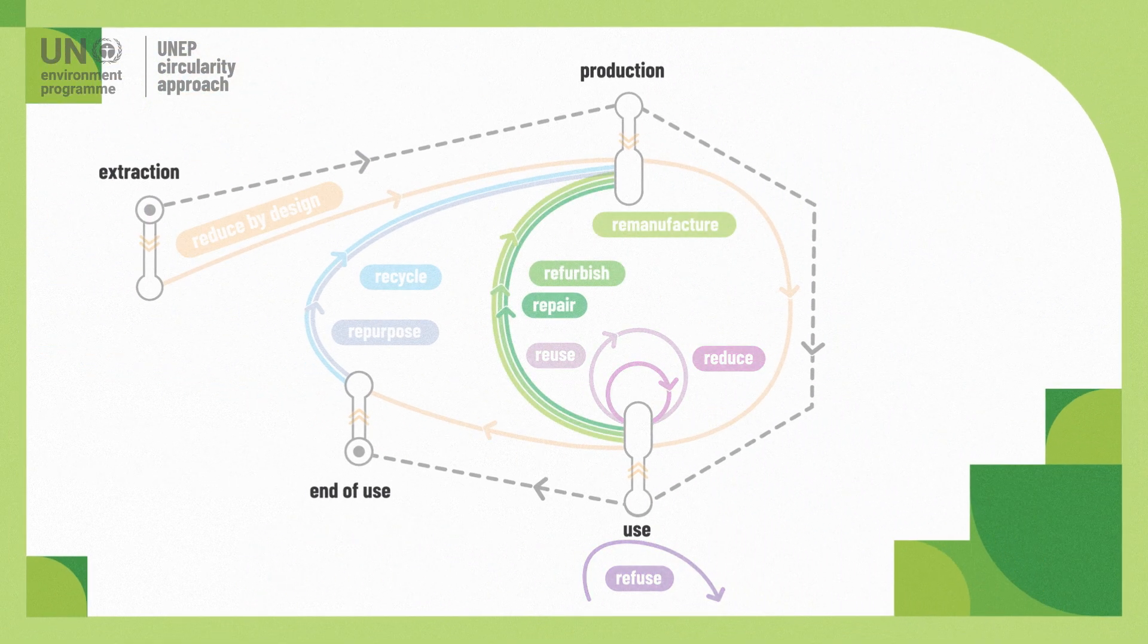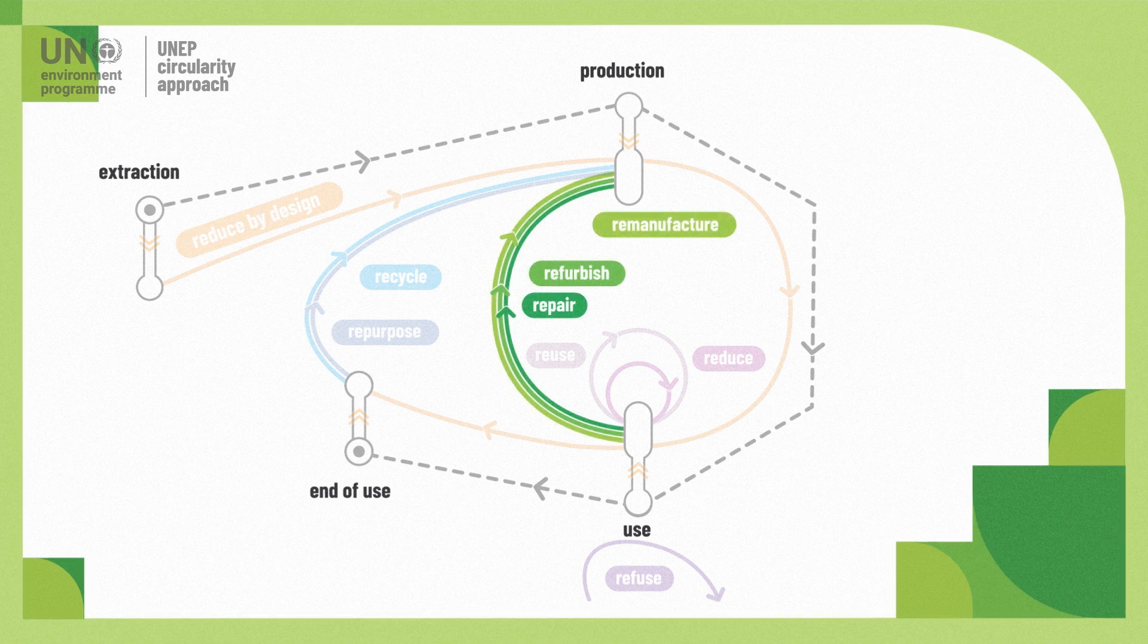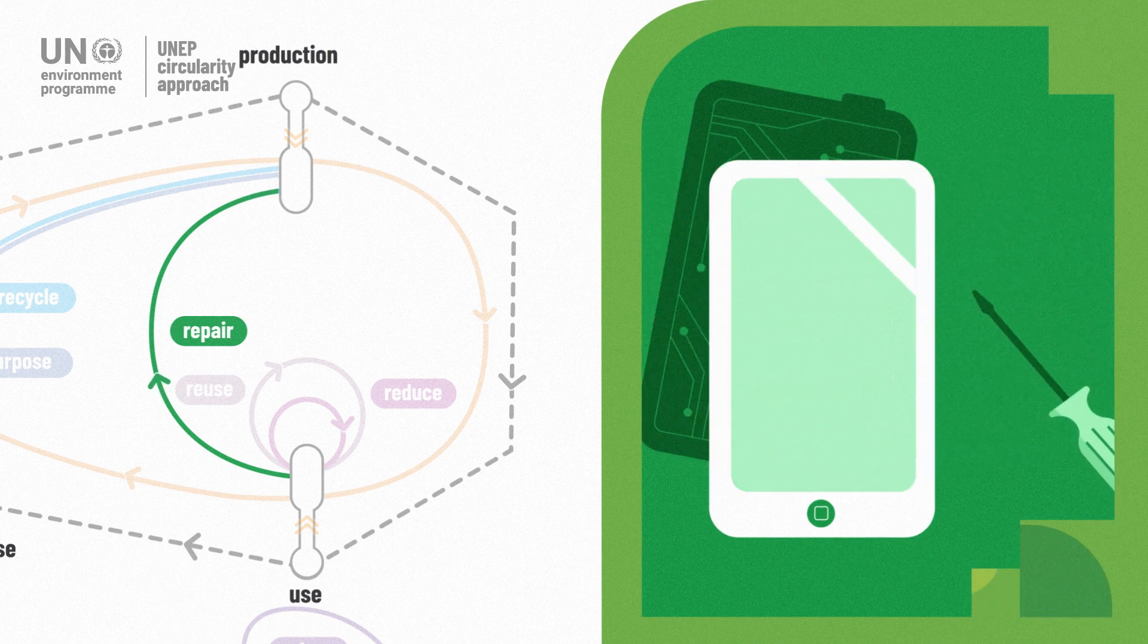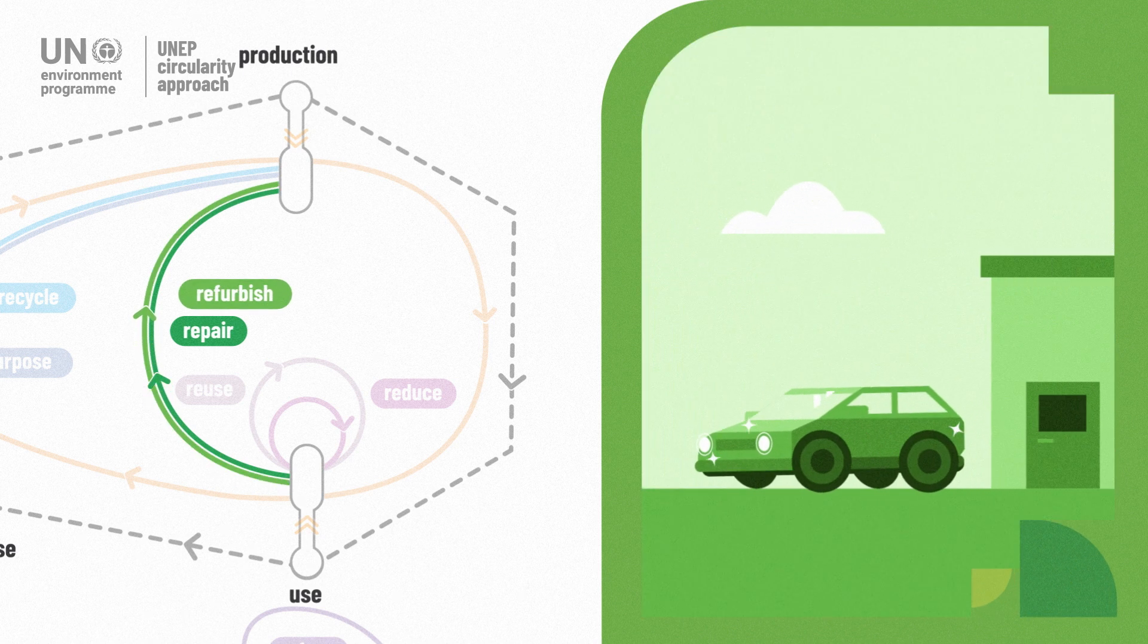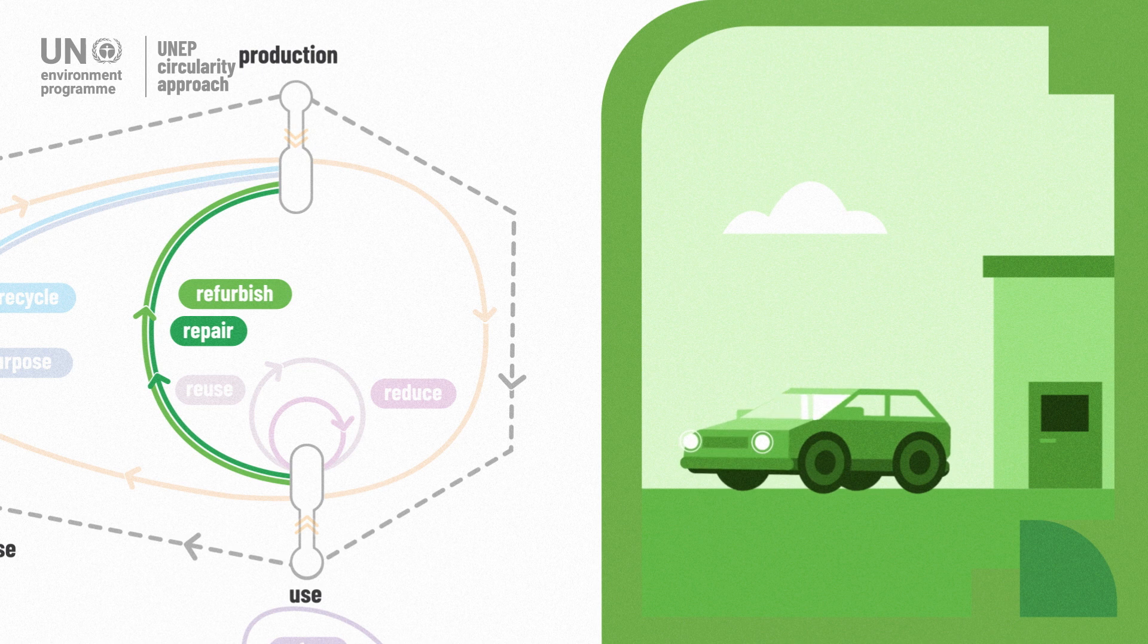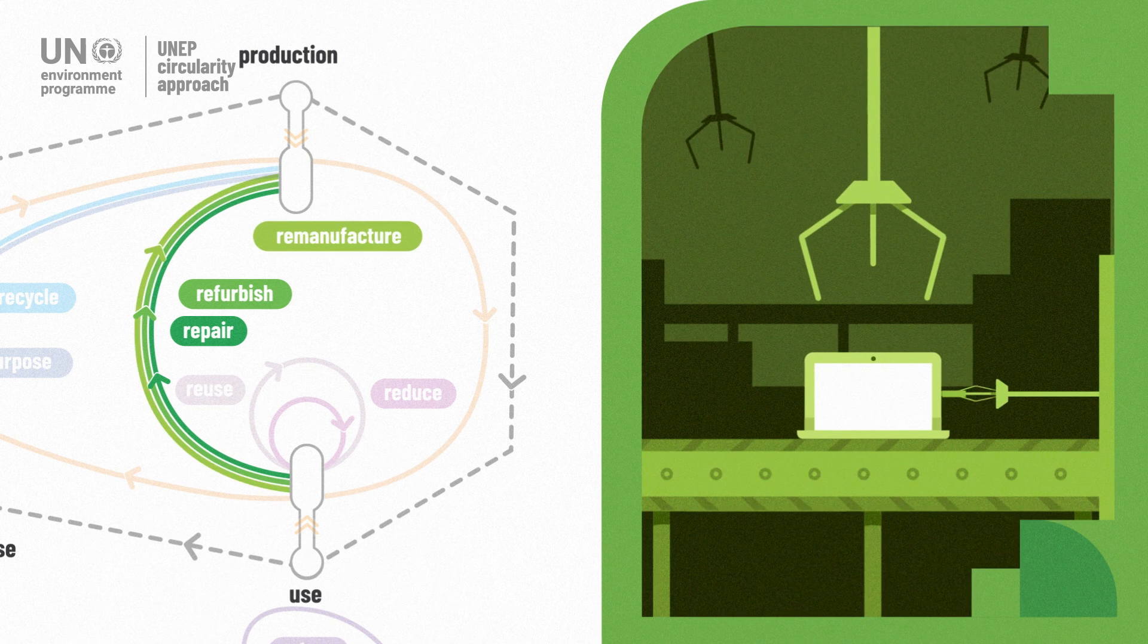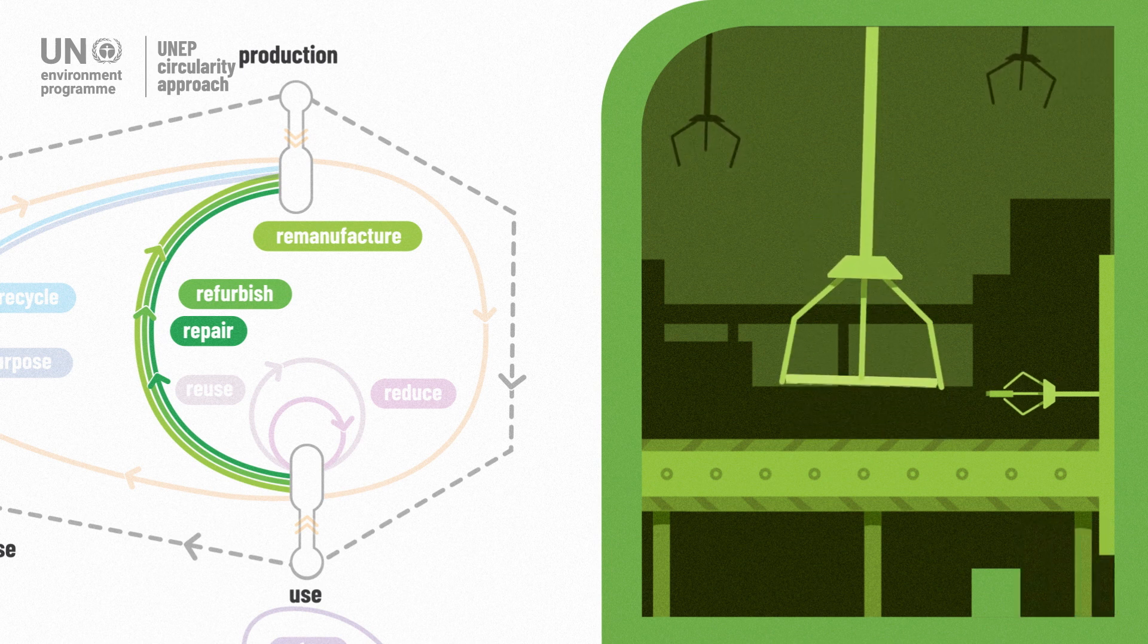When a product doesn't work anymore, its lifetime can be extended while minimizing impact and cost by repairing broken parts or defects, refurbishing it to increase or restore its performance, or remanufacturing it to fix it in an industrial process to become as new again.